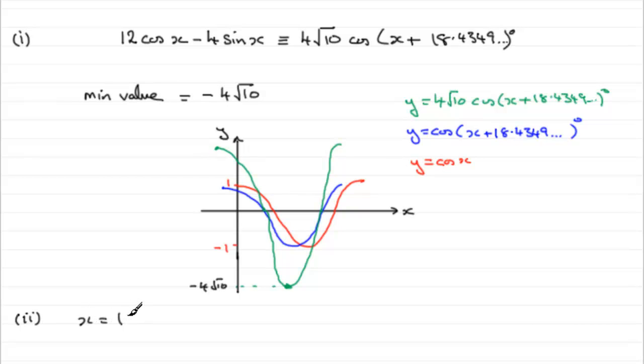Is just to do 180 then minus 18.4349 odd degrees. Okay, so let's just do that. x equals 180 minus 18.4349 odd degrees. That's the first value of x that that minimum occurs. Work that out, and give your answer to two decimal places. You'll end up with 161.57 degrees to 2 d.p. as requested. Okay?